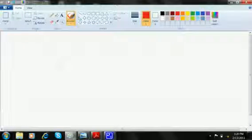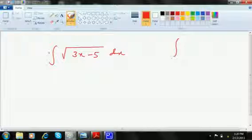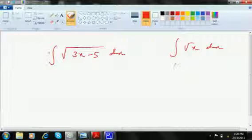If it is integration of square root of 3x minus 5 dx, let's think of how to integrate root x dx. Root x is x to the power 1 by 2 dx. So this is x to the power 1 by 2 plus 1 by 1 by 2 plus 1 plus c.